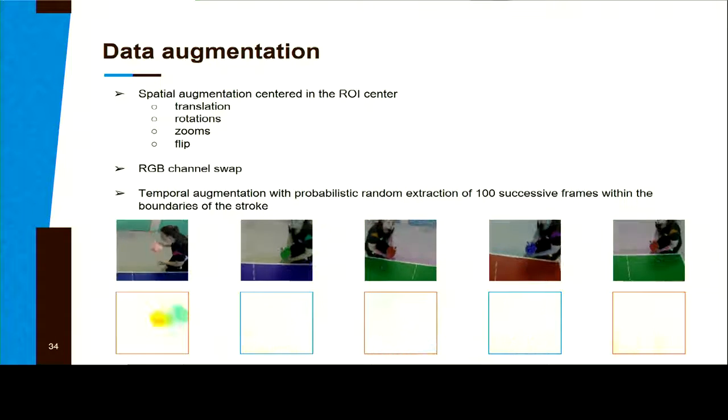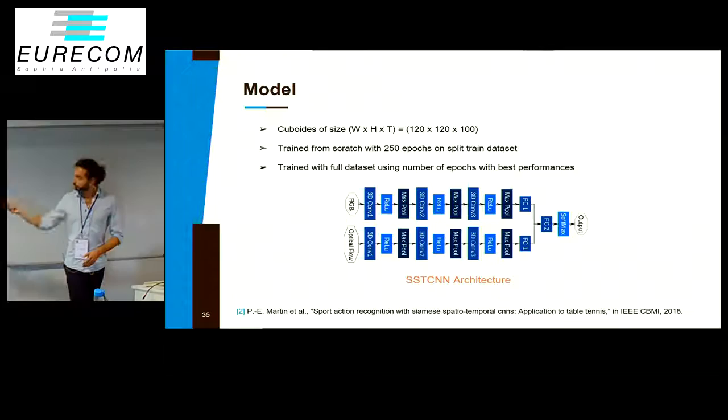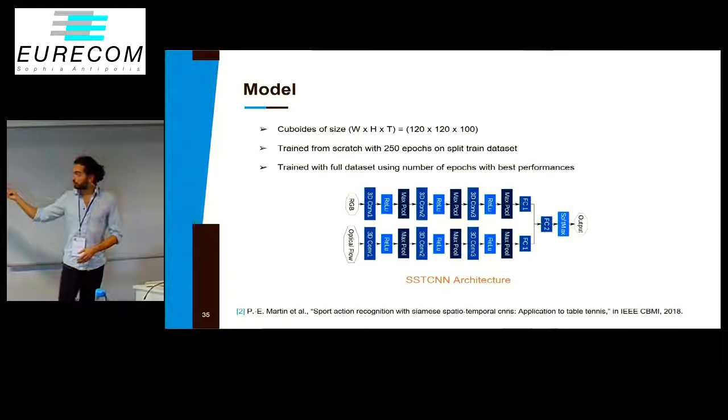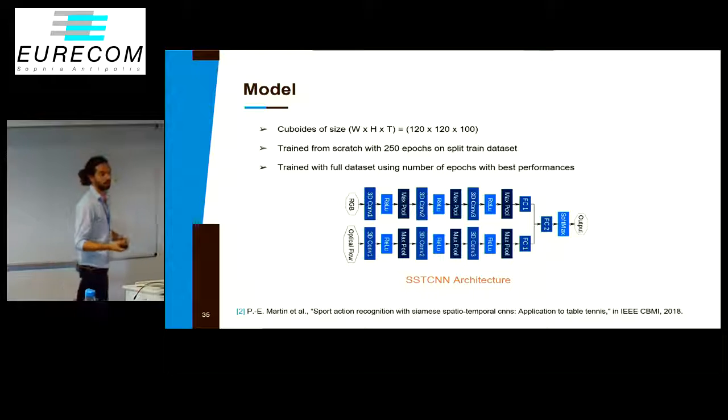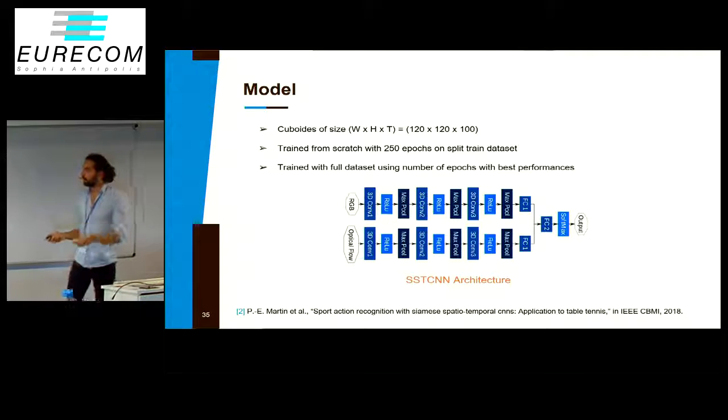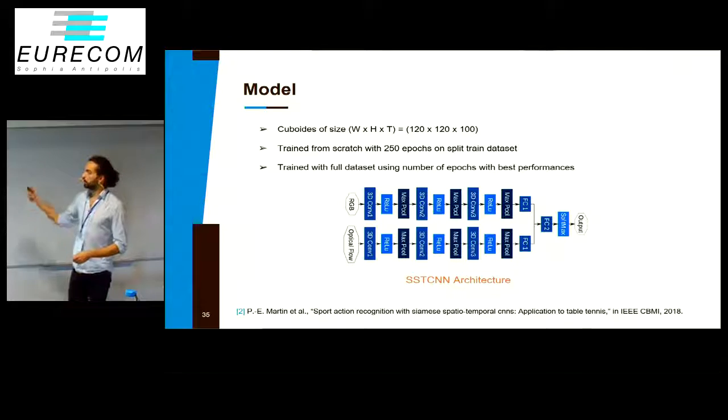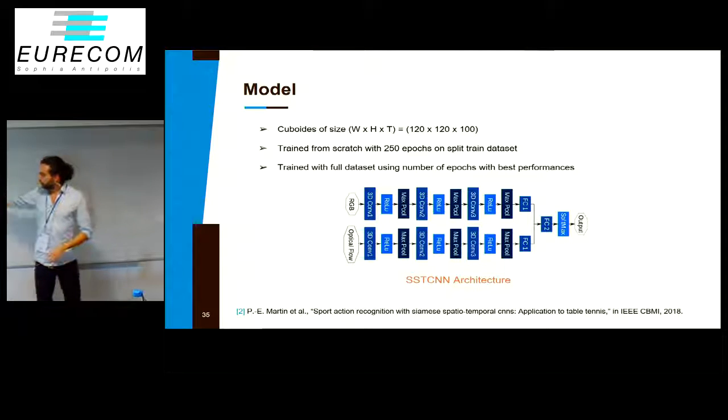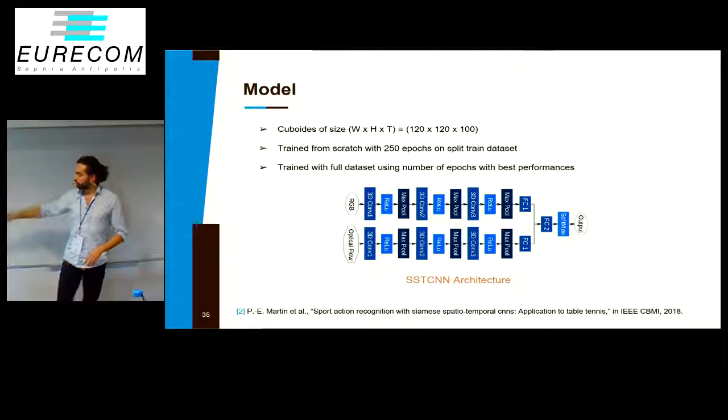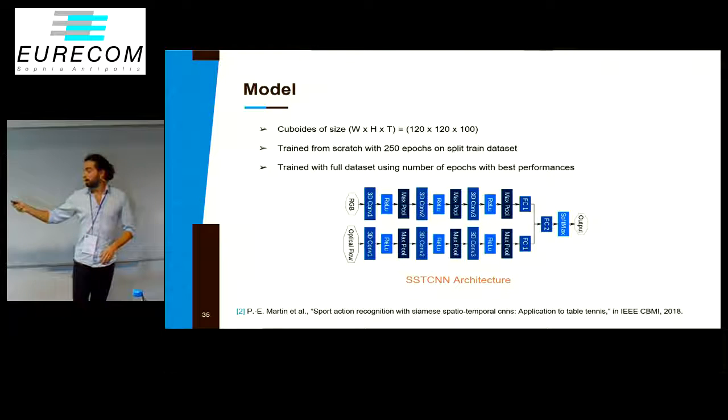For the model, we decided to use 3D convolution. We have cuboids of data in RGB and optical flow. We trained from scratch this model which takes RGB and optical flow in a parallel way, and then we fuse them at the end using a bilinear dense layer.